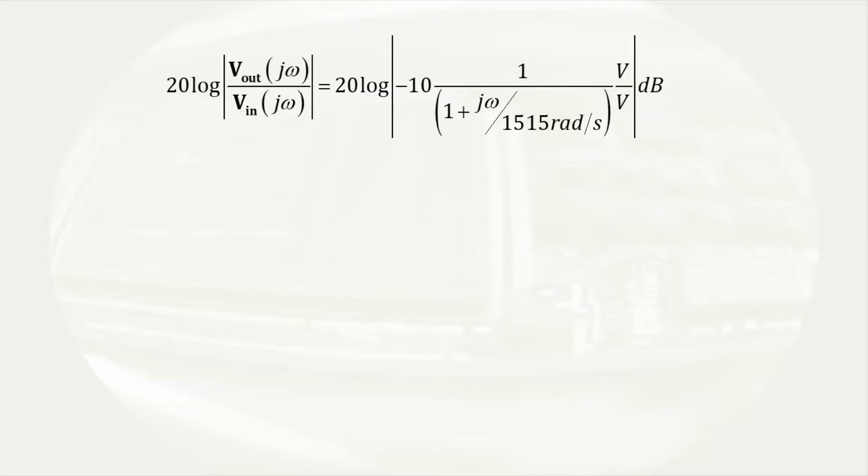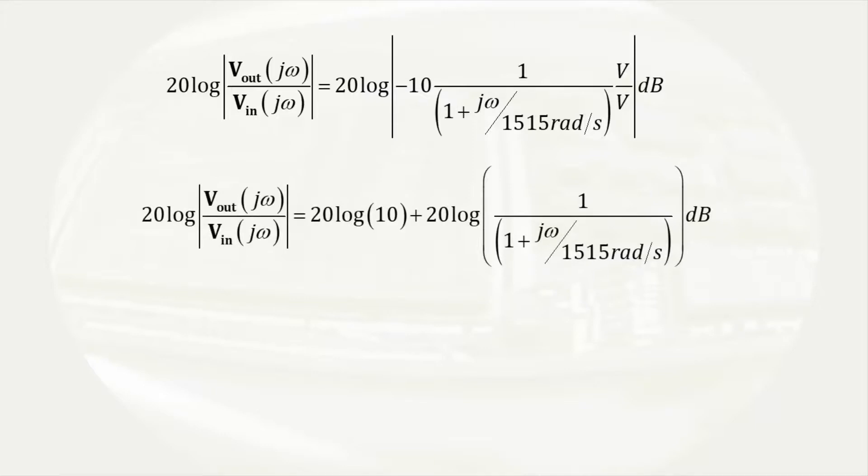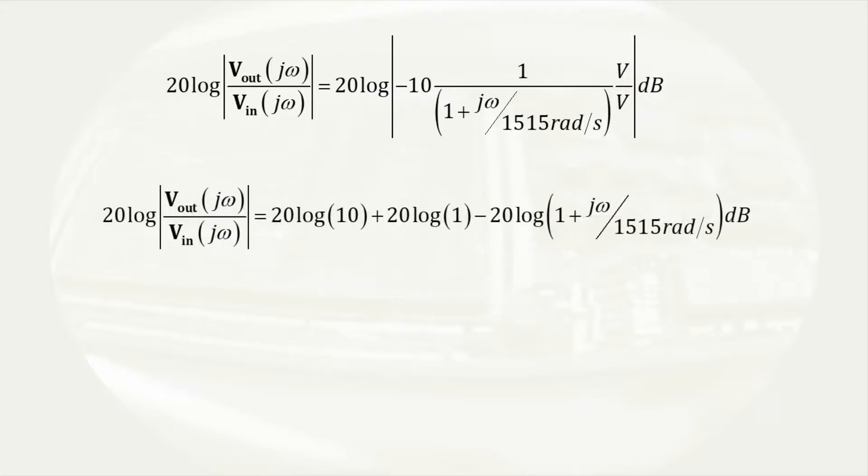Remembering some properties of the logarithm, products inside the argument of the log can be written as additions of log functions, and divisions can be written as subtractions. Therefore, in this case, we will end up with three terms. 20 times the log of 10 plus 20 times the log of 1 minus 20 times the log of 1 plus j omega over 1515 radians per second.